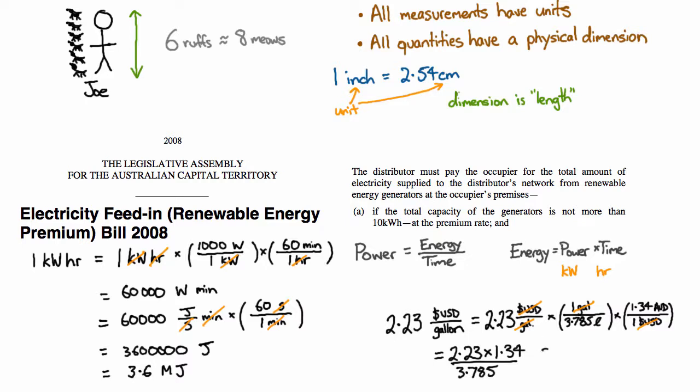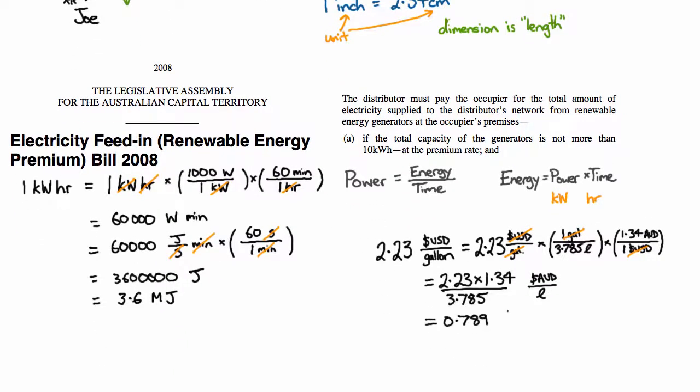And our final unit is Australian dollars per litre. Which is the unit I'm used to seeing on petrol pumps. So I'll be able to understand whether that's a big or a small number. So I plug that into a calculator or do my arithmetic in my head and I get 78.9 cents per litre. Which I must say does look like a small number to me.